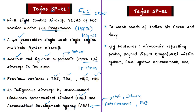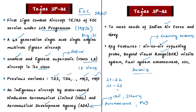Key features of the new Tejas SP-21 include air-to-air (A2A) refueling capacity, allowing it to fly non-stop for about eight hours with A2A refueling support, giving a fillip to Indian Air Force operations. Other key features include a beyond-visible-range missile system, fuel system enhancement, and integrated digital avionics systems. HAL also says that Tejas SP-22 is likely to fly at the end of this month, and SP-23 and SP-24 will join by the end of May 2020.